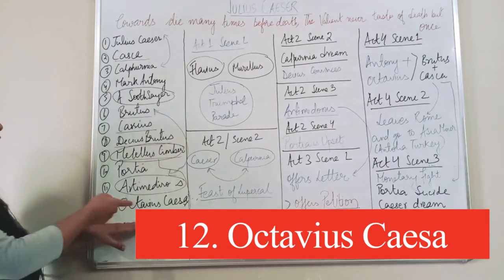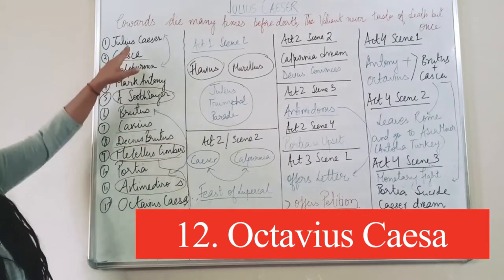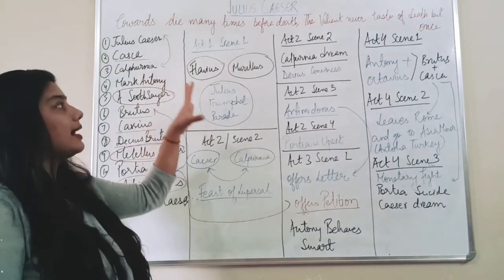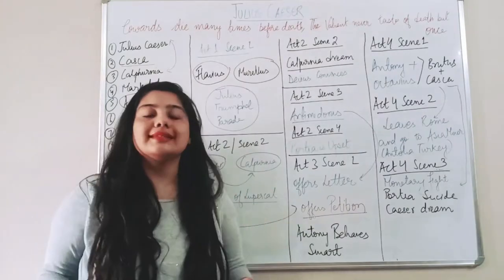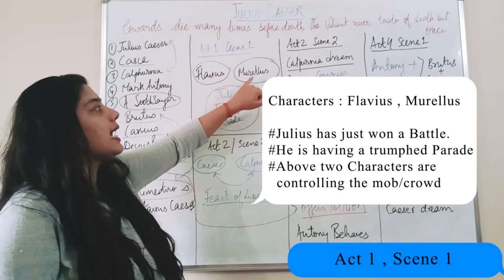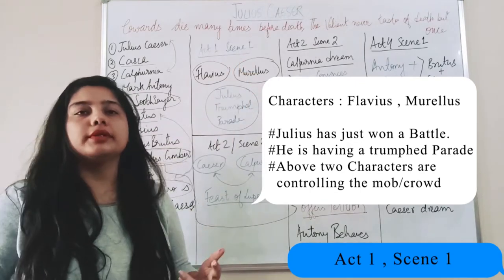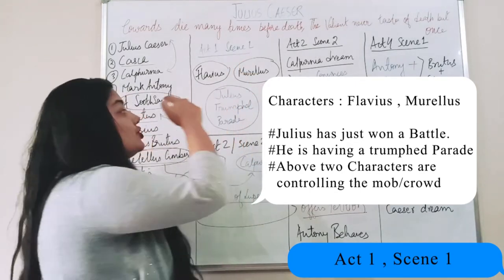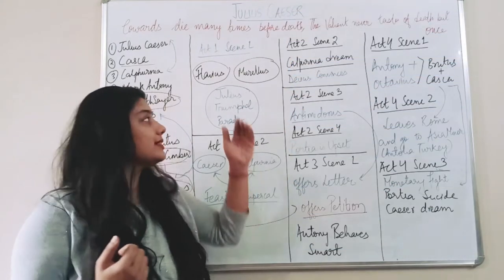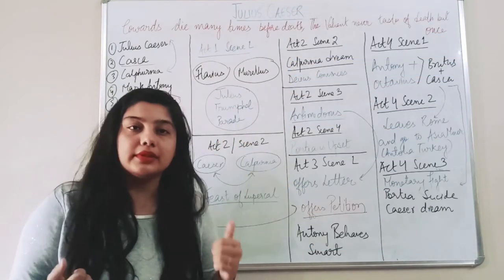Octavius Caesar is the nephew of Julius Caesar and his role is also very important because he took the revenge of Julius' death. So now we will start from Act 1 Scene 1. The story starts with Act 1 Scene 1. There are two people mentioned here, Flavius and Murellus.